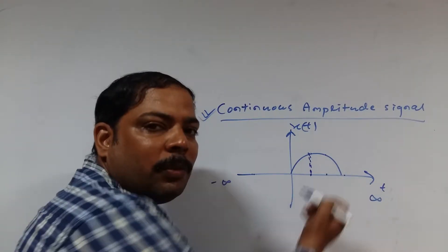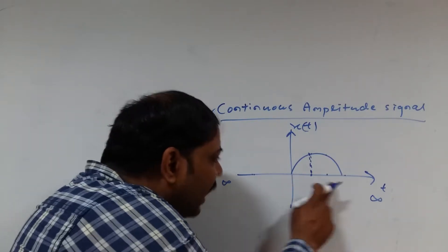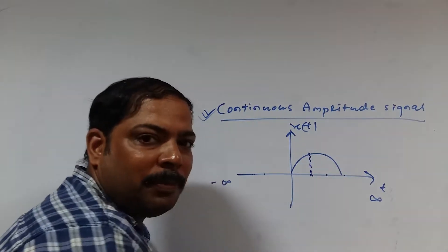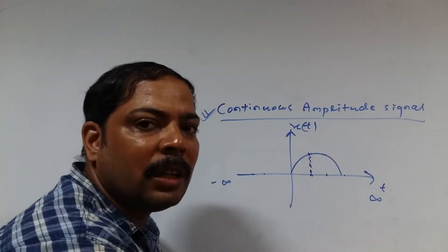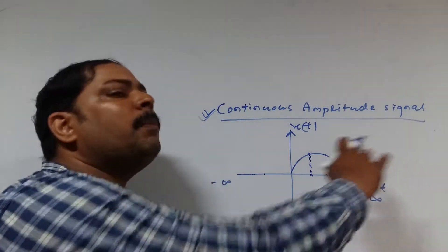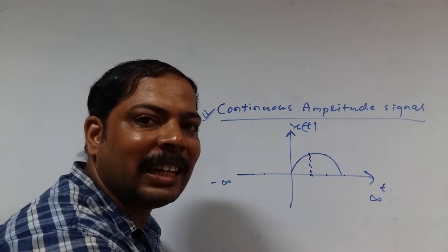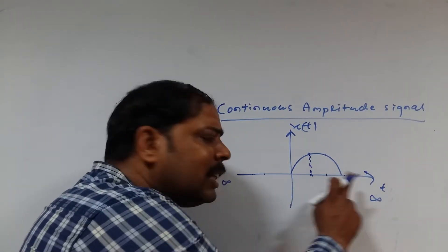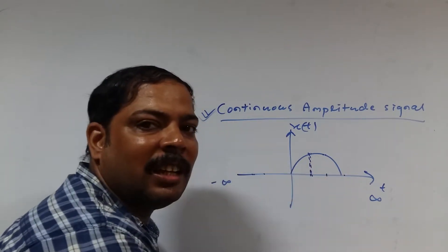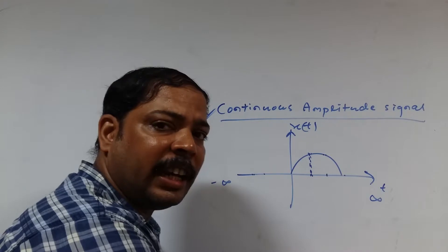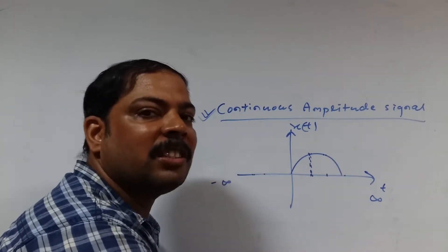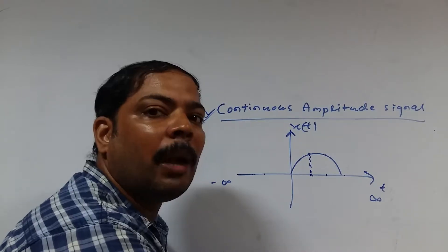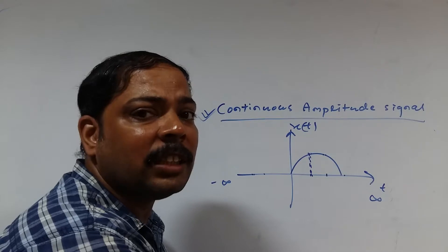For each and every time point the signal has a value — for some time points the value is zero, for others the signal has a nonzero value. Every time point you are considering, and over the signal every time point exists. That means all time points from minus infinity to plus infinity are considered, and that is why we say that signal is basically a continuous time signal. Whenever you are discussing continuous time signal, you consider each and every time point over the time axis and you define the signal at all of those points.